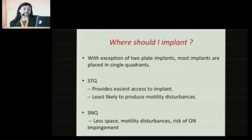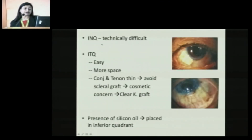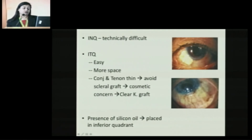Where should you implant? With the exception of two-plate implants, most are implanted in a single quadrant. The preferred quadrant is the supero-temporal, because it provides easiest access and is least likely to produce motility disturbances. In the supero-nasal, there is less space, motility disturbances are common, and there is a risk of optic nerve impingement. Infero-nasal is technically very difficult. Infero-temporal can be tried — there is more space, but cosmetically, a scleral graft may not be appealing, so a corneal graft may be used to cover the tube. If silicon oil is present in the eye, especially with an inverse hypopyon, you may place the tube in the inferior quadrant to prevent oil from flowing through the tube.